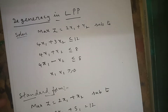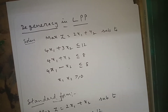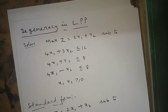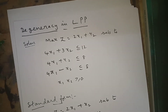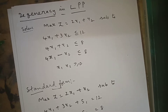Hello everyone. Today I am going to explain about degeneracy in LPP — when will the degeneracy occur in LPP. To solve this degeneracy problem, first we will take one LPP and solve it. Max Z is equal to 2x1 plus x2. While solving this LPP in the simplex method, the degeneracy occurs. I will tell you how to identify whether degeneracy occurs or not.